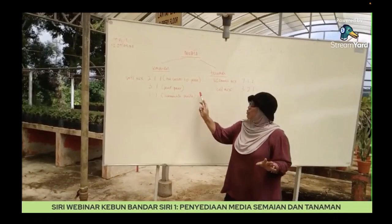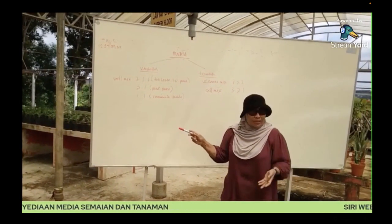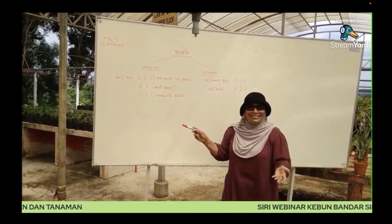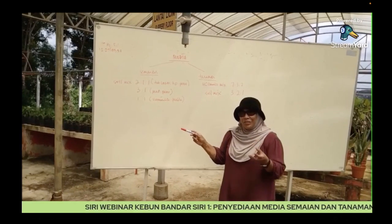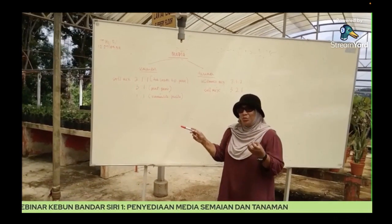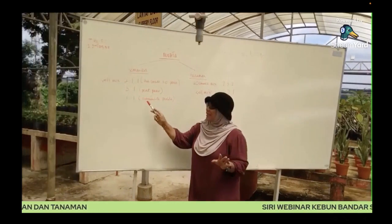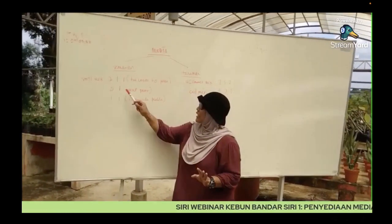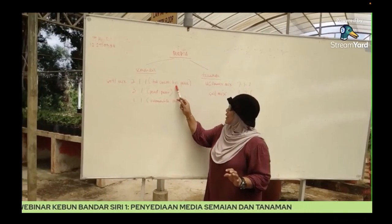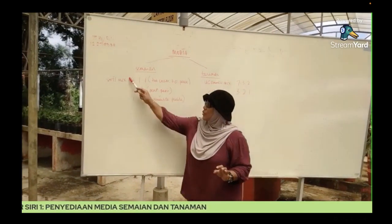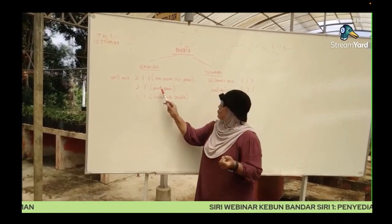Untuk media semayan, media ada banyak jenis yang kita boleh ikut. Kalau kita lihat dekat Google, dekat YouTube, memang ada contoh yang kita boleh gunakan, dan setiap mixture itu ada keperluan dia sendiri untuk pertumbuhan yang sihat. Kita gunakan 2:1:1 — kita gunakan tanah loam ataupun topsoil, bahan organik, dan pasir. Ataupun kita boleh gunakan peat dengan pasir dengan ratio 3:1.